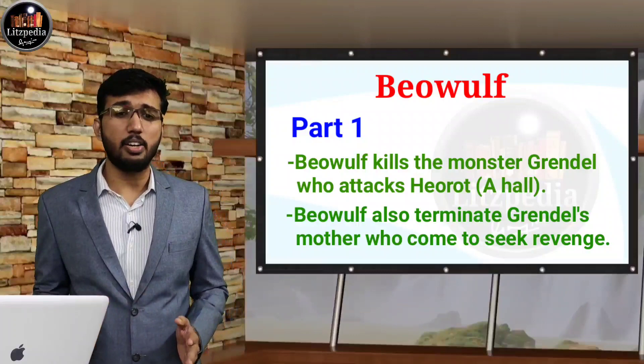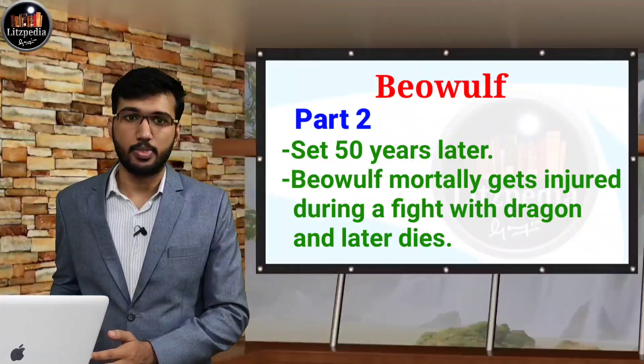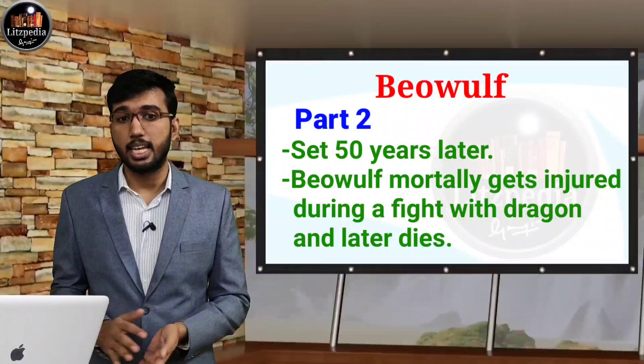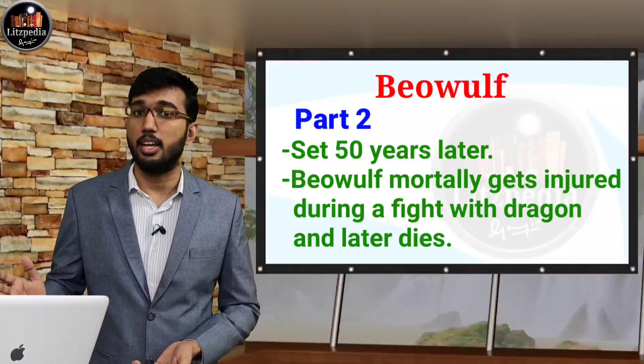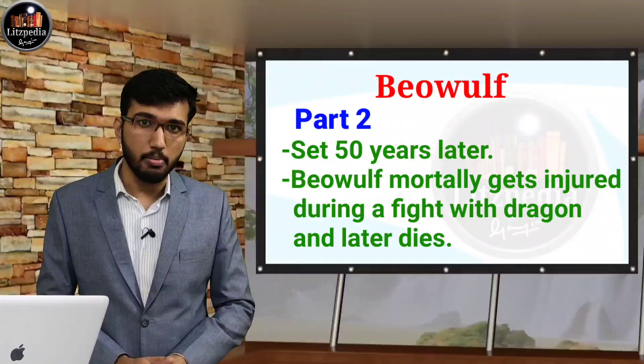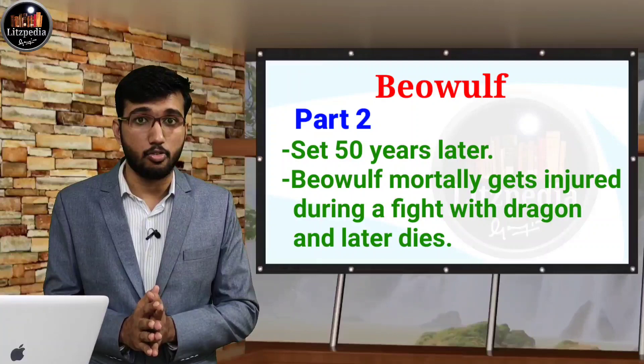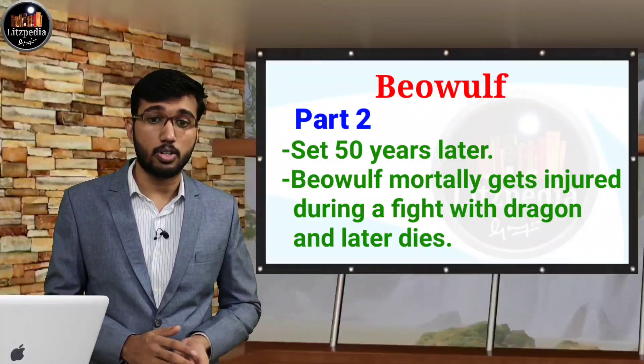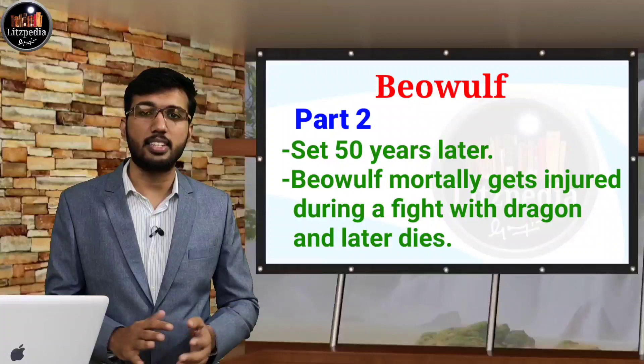In the second part, we can see that the second part of Beowulf is set 50 years later after the first part. Beowulf is now the king of Geats. A dragon comes to attack the people in the land and Beowulf successfully fights and kills him. But Beowulf was mortally wounded during that time. It later ends with Beowulf's mortal burial. That is regarding the two parts and the plot of Beowulf.